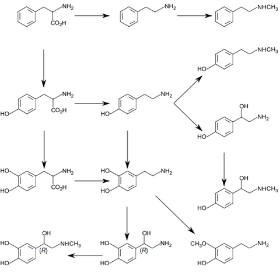Elevated PNMT expression is one of the ways that the stress response positively feeds back on itself. An increase in stress hormones or nerve impulses due to stress can cause PNMT to convert more norepinephrine into epinephrine. This increases the potency of the catecholamine response system, increasing the sympathetic output and making the stress response more profound.